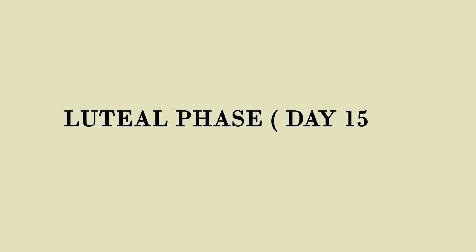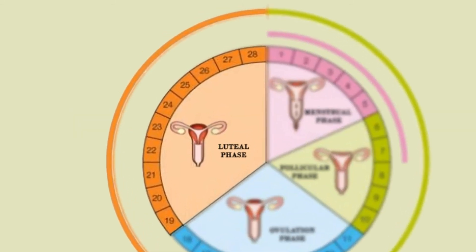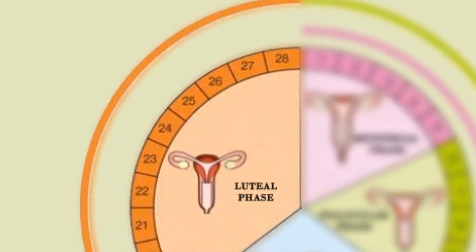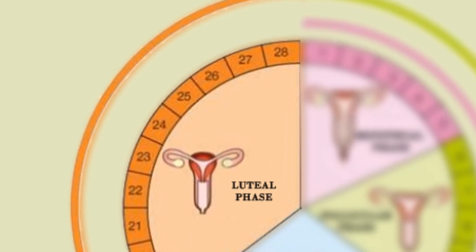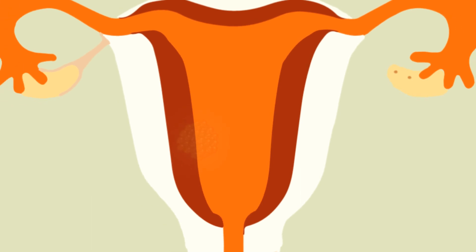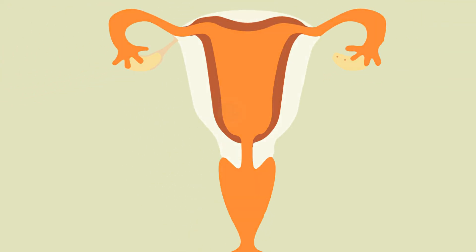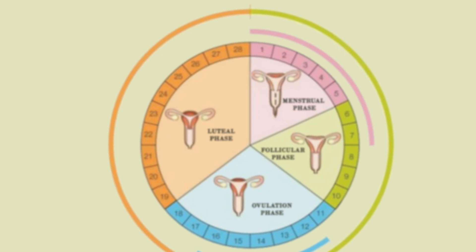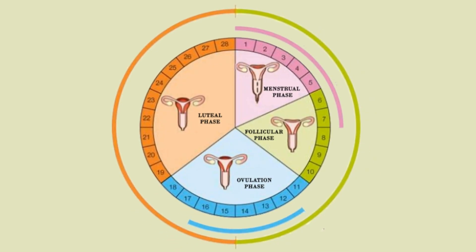Luteal phase, day 15 to 28. This phase begins on the fifteenth day and lasts till the end of the cycle. The egg cell released during the ovulation phase stays in the fallopian tube for 24 hours. If a sperm cell does not impregnate the egg cell within that time, the egg cell disintegrates. The hormone that causes the uterus to retain its endometrium gets used up by the end of the menstrual cycle, causing the menstrual phase of the next cycle to begin.